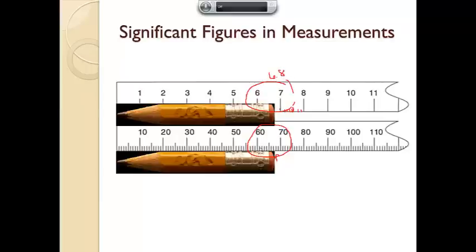Whereas the one on the bottom, we see that there's gradients. So we can count the gradients. It's going from 60 to 70, and there are 10 gradients. So 1, 2, 3, 4, 5, 6, 7. So it's at least 67 point something. That means I have to estimate that last one, so maybe 67.5.